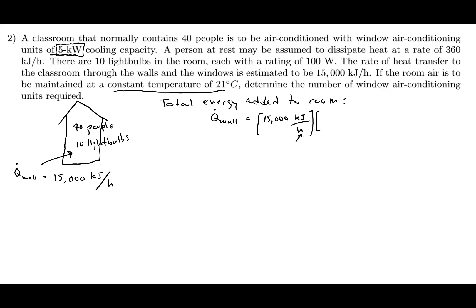So I have 15,000 kilojoules per hour, and there's 3600 seconds in one hour. So this is equal to 4.17 kilojoules per second, which is 4.17 kilowatts. That's one of the energy sources.